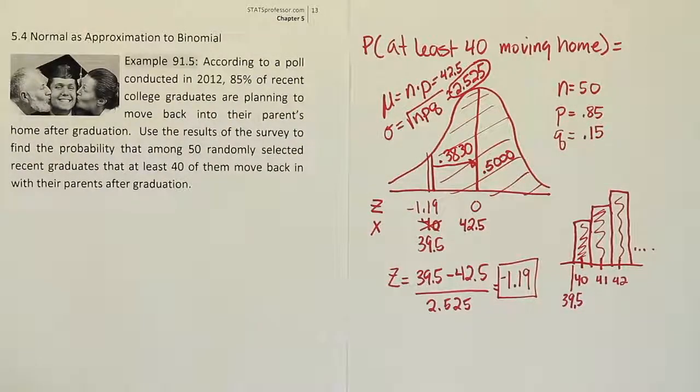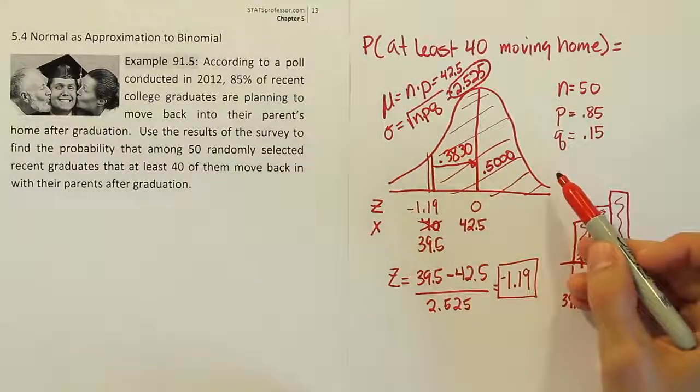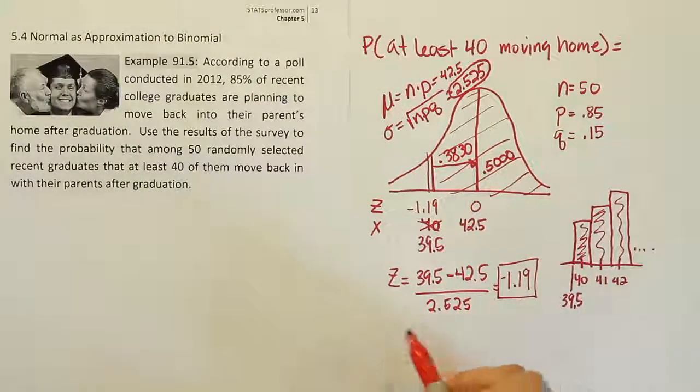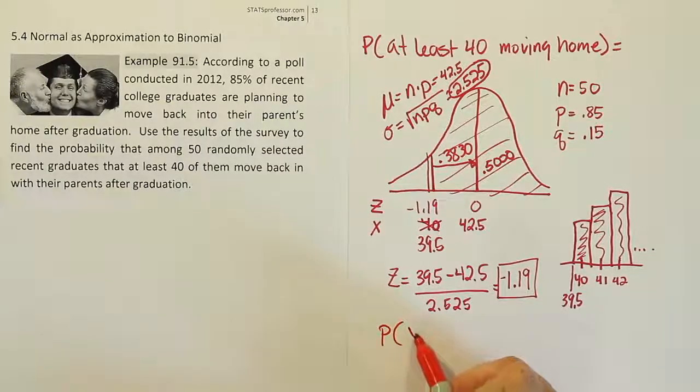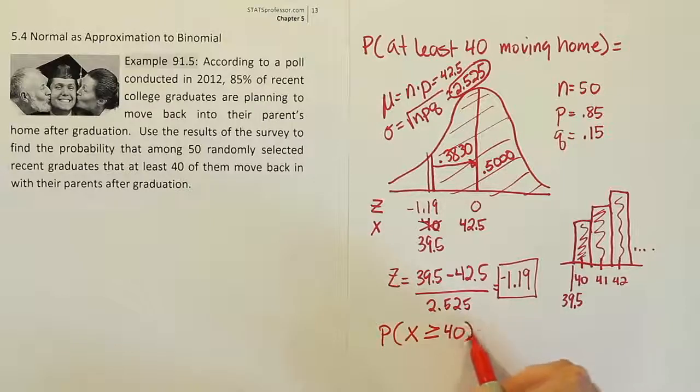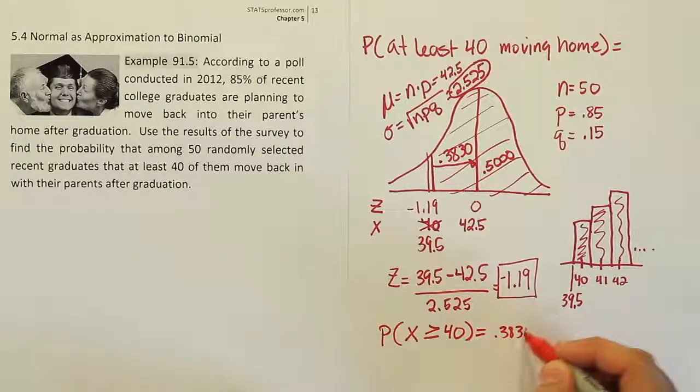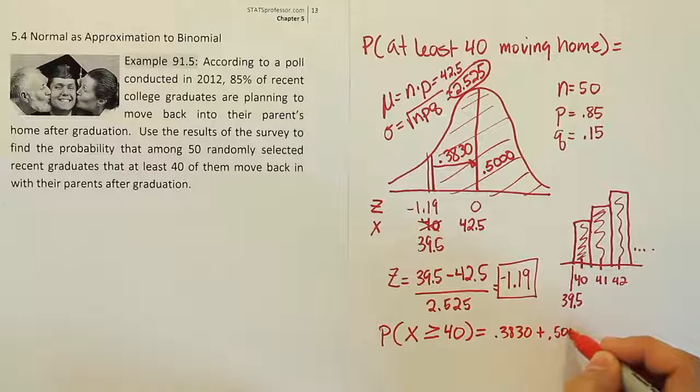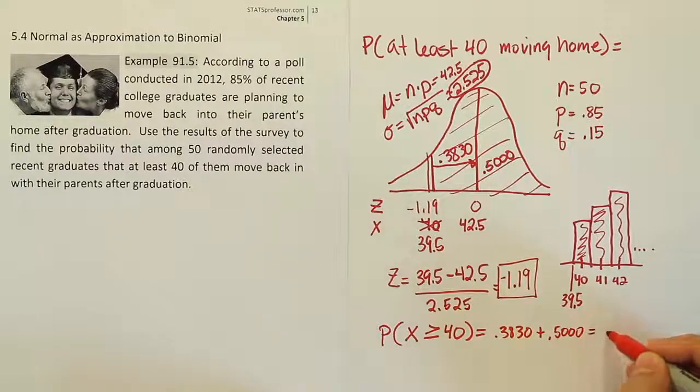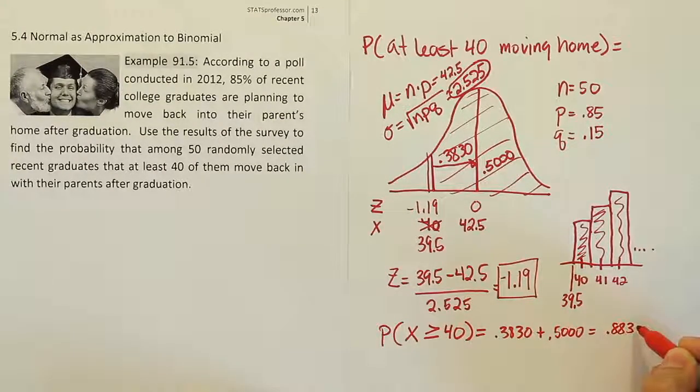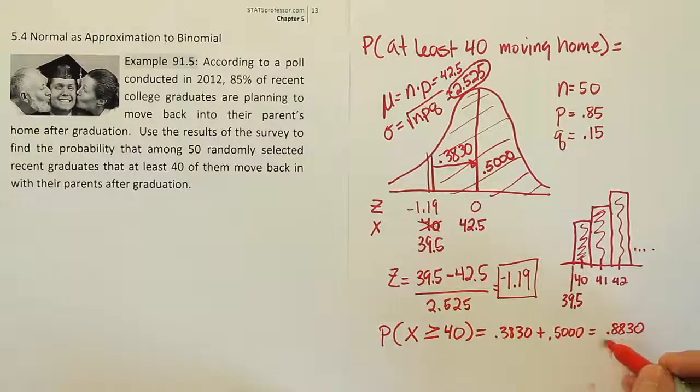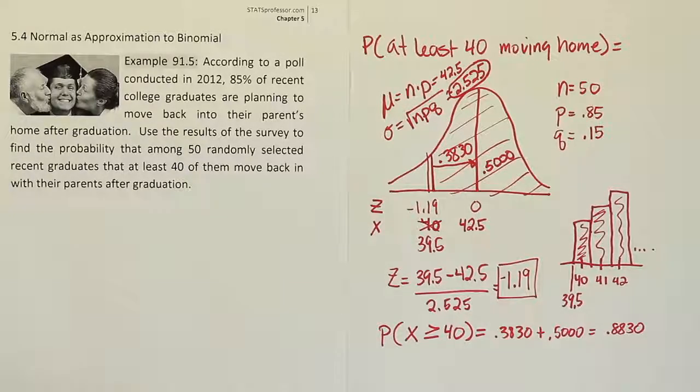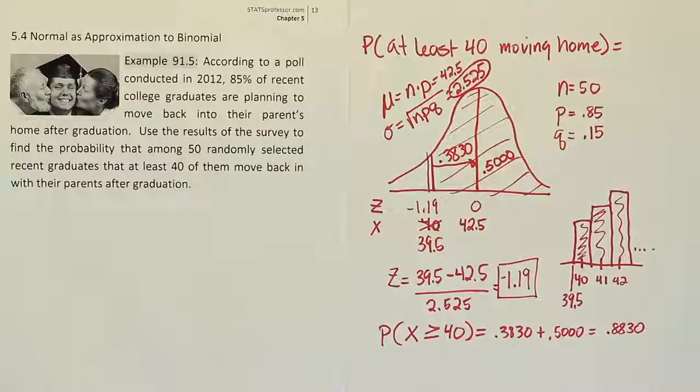We found the value 0.3830. That's our area, and we put them together then to add the two areas together to get the total area of the shaded region. The probability that the number of successes is greater than or equal to 40 will be equal to 0.3830 plus 0.500, which of course gives you 0.8830. So 88.3% is the probability that this would occur if you looked at 50 people. You'd have at least 40 of them saying they're going to move back home.